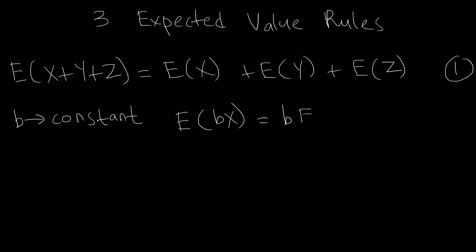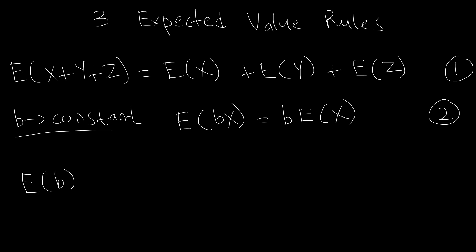That's the second rule. The third rule is pretty straightforward. If you have a constant B, then according to the third rule, the expected value of a constant is just the constant itself.